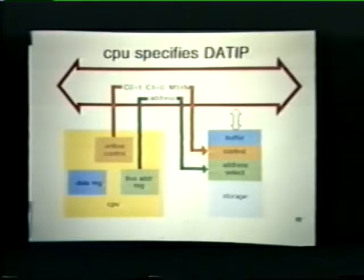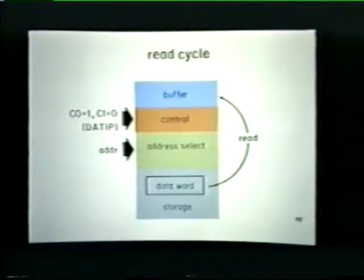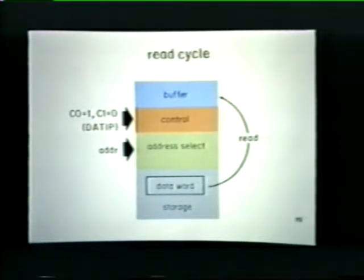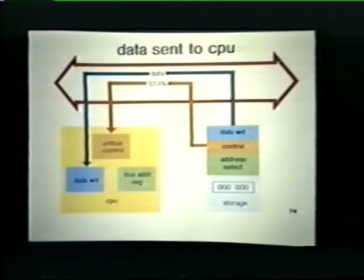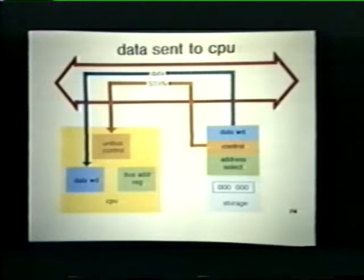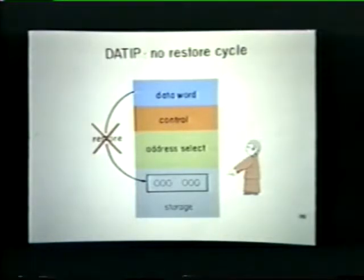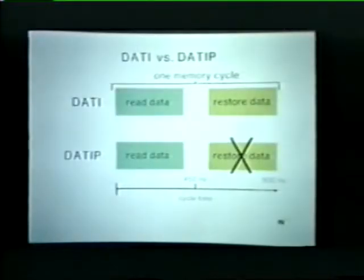The memory unit recognizes the address placed on the bus. Since a data IP has been requested, the memory unit locates the word addressed by the CPU, reads the word from its storage location, and loads this word into its buffer register. Next, the memory unit places the word onto the bus and issues a slave sync signal, informing the master device that the addressed data word is on the bus. That completes the read cycle. Because a data IP has been specified, the memory bypasses its restore cycle. If it happens to be a core memory, the address location now contains all zeros.